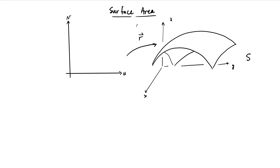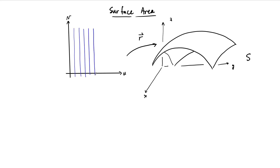The idea here is that this surface should be parametrized by a vector function, which is parametrized by two parameters, u and v. I'm sketching some constant u values as a grid, and here are some constant values of v.